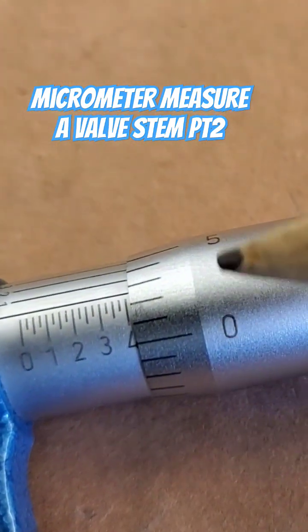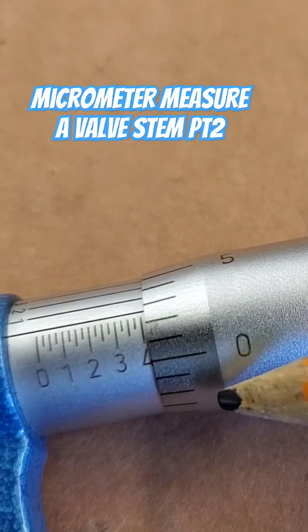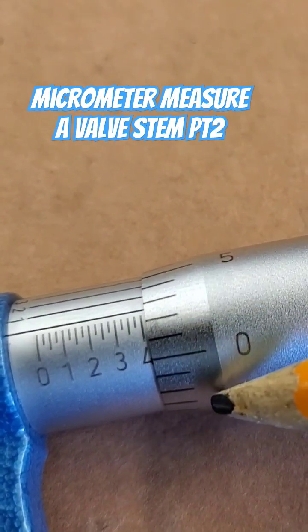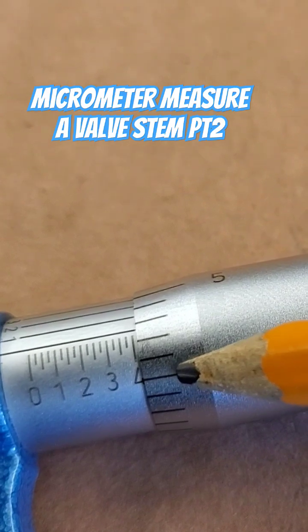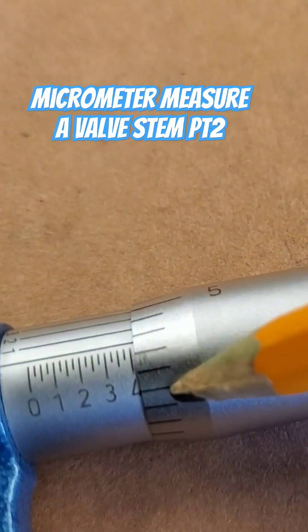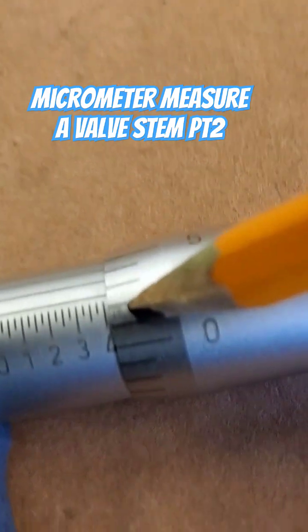What I do is I look right here at my thimble, there's another measurement. And then I end up writing that number down which starts from zero, which is a zero, one, two, and...